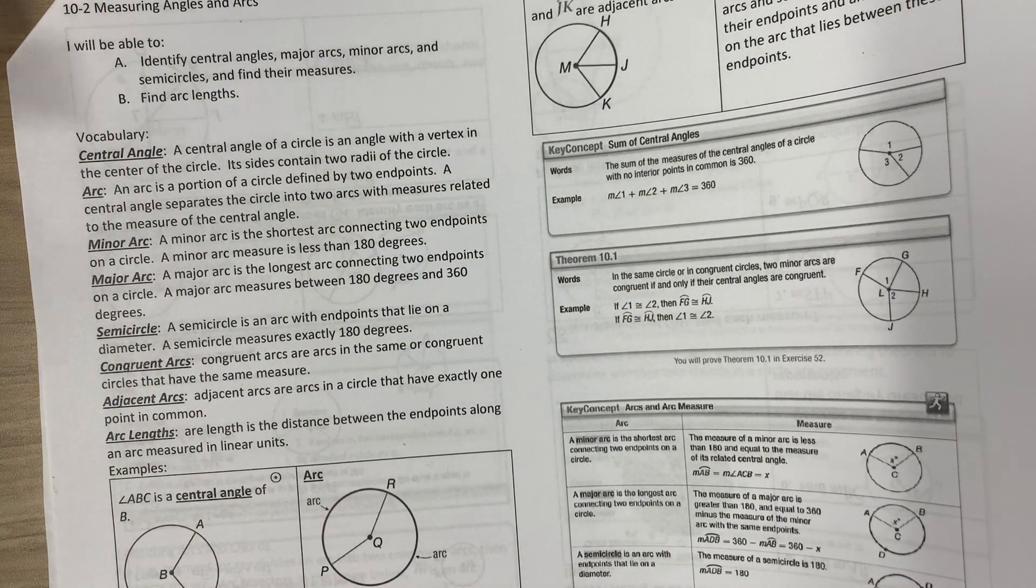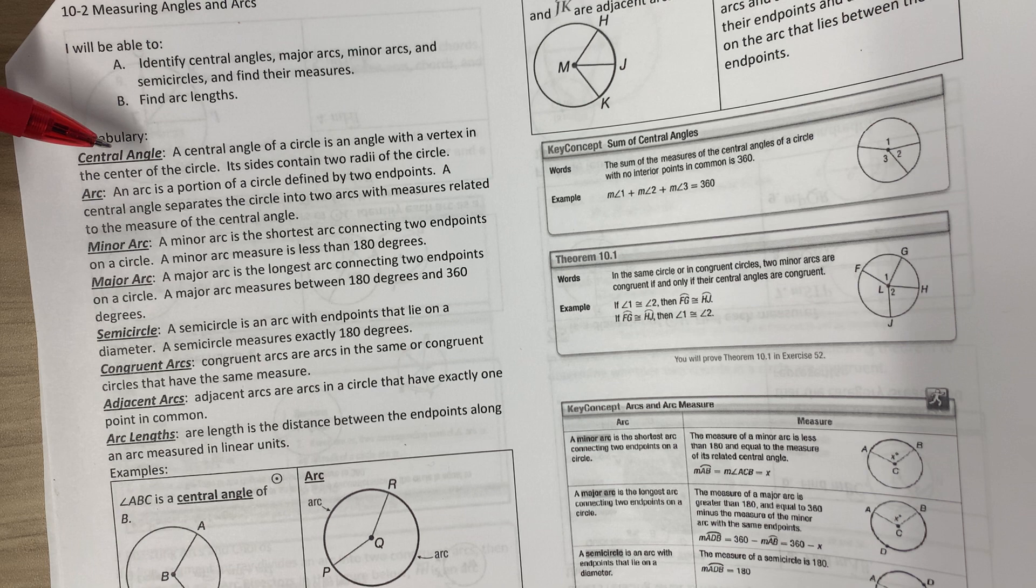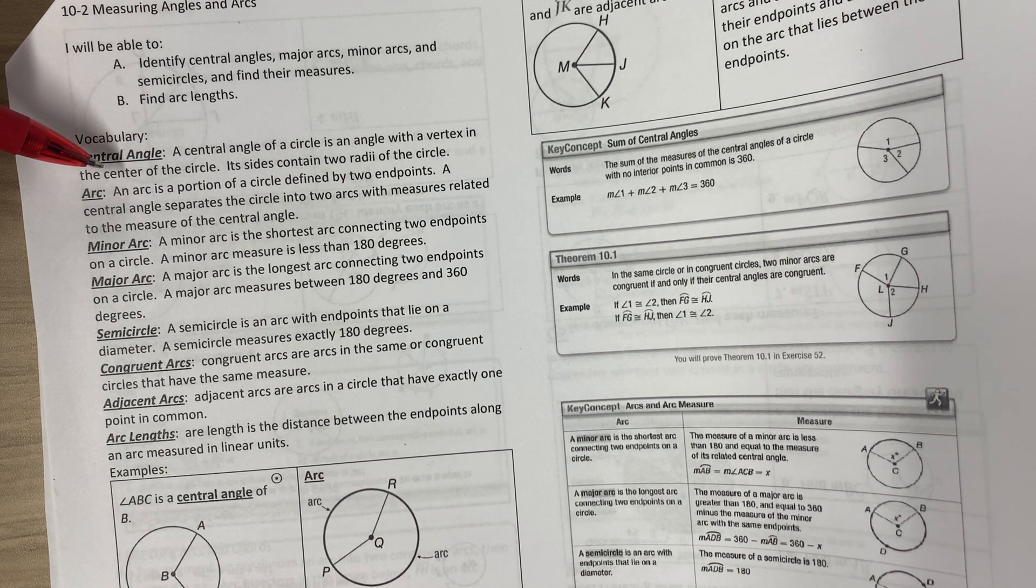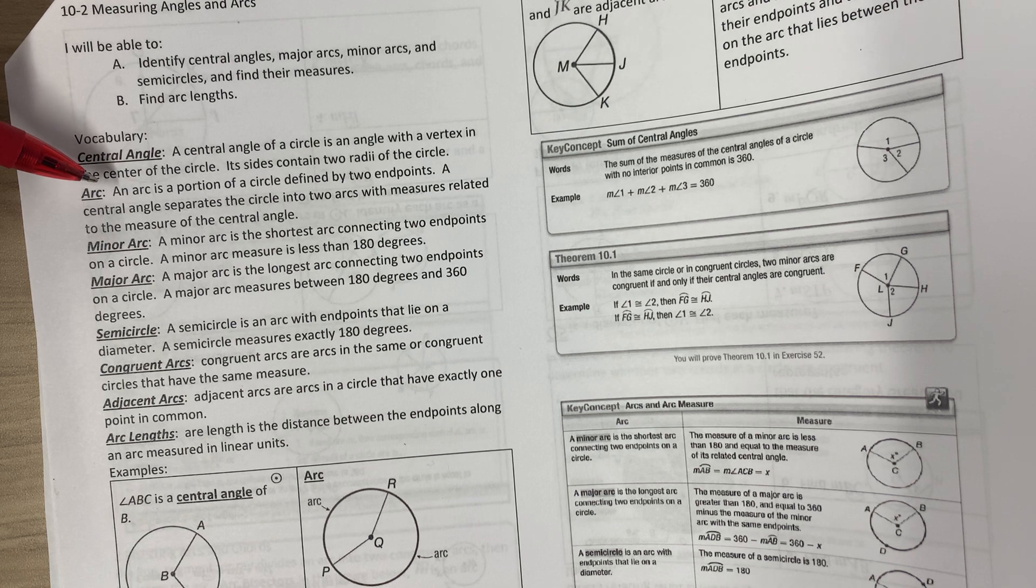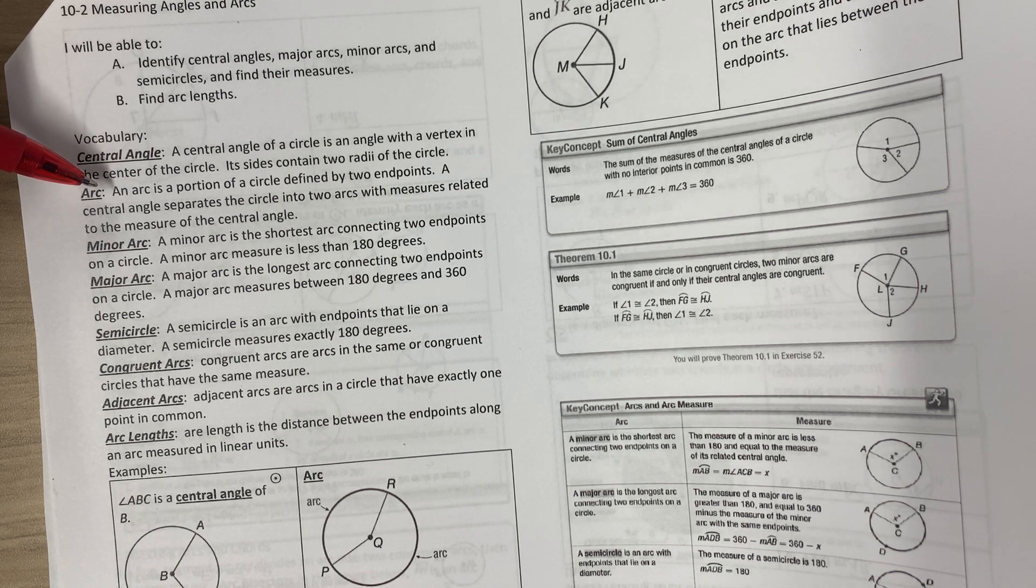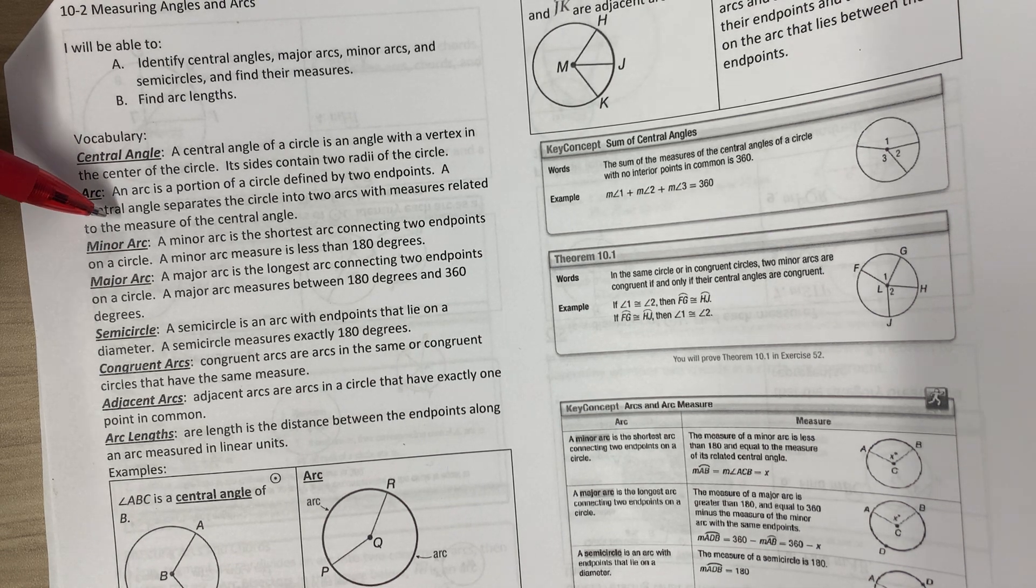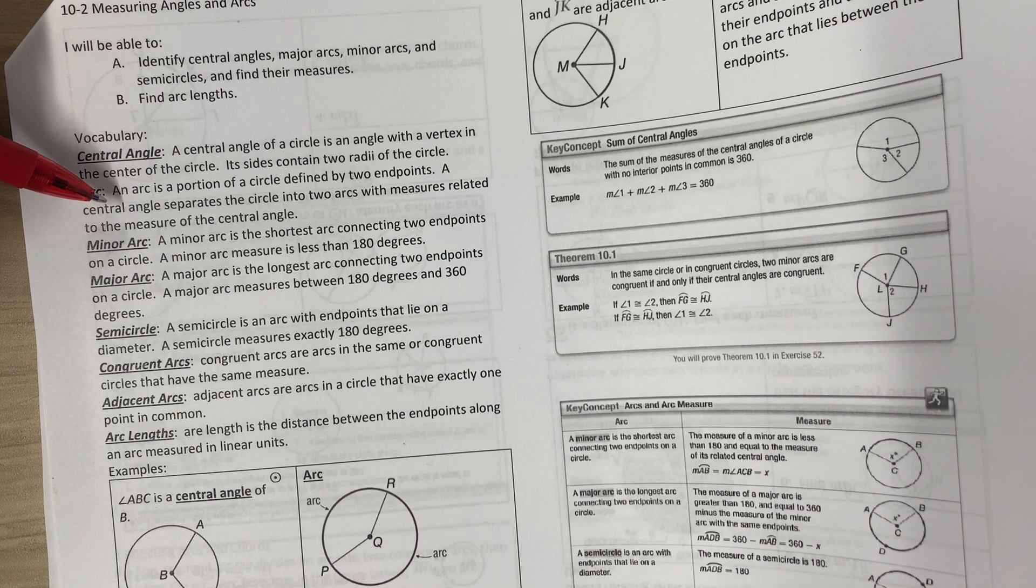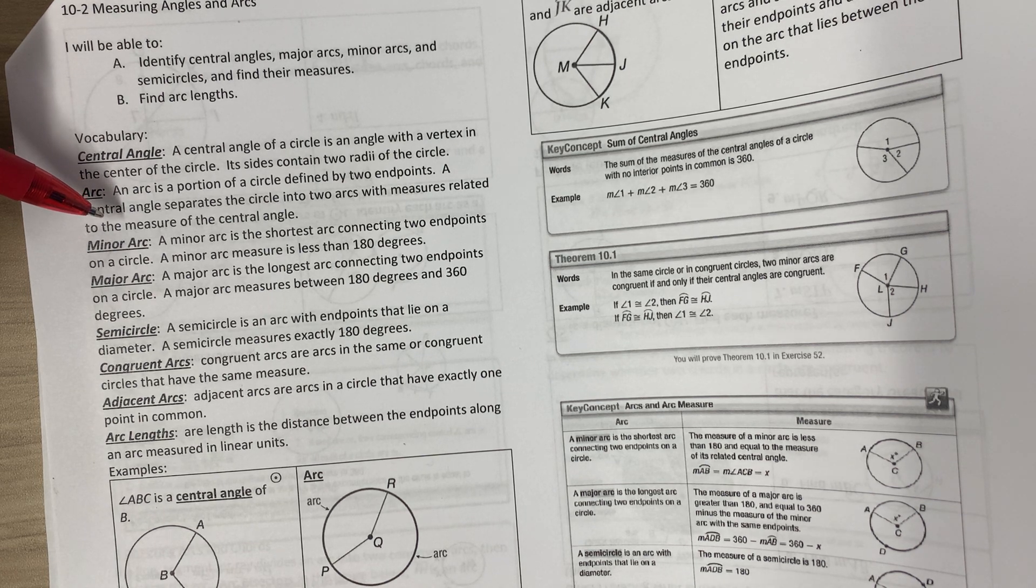We've got a whole bunch of vocab for you. A central angle of a circle is an angle with a vertex in the center of the circle. Its sides contain two radii of the circle. An arc is a portion of a circle defined by two endpoints. A central angle separates the circle into two arcs with measures related to the measure of the central angle.